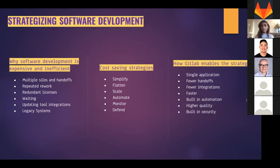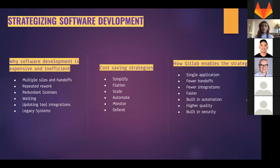To use automated decision-making and reduce cost, we need to simplify our tool cycle, flatten it across teams, scale things easily, move from manual to automated work, monitor through every stage of the DevOps lifecycle, and have security defended through all processes - not as a later stage. In GitLab, we believe this can be achieved through a single application with fewer handoffs, fewer integrations, faster built-in automation, higher code quality, and built-in security.